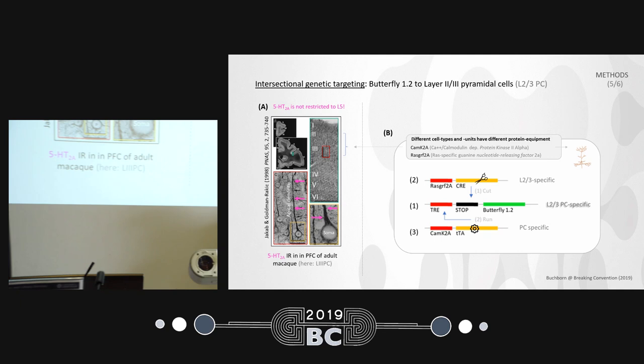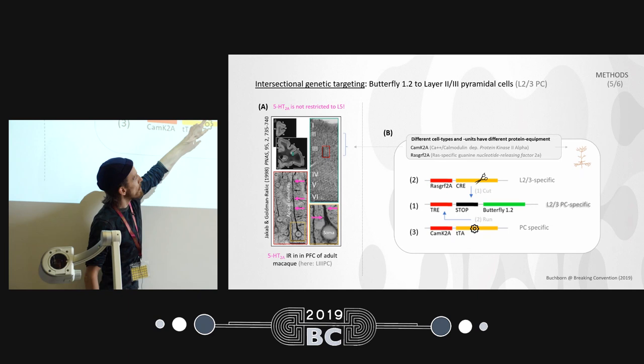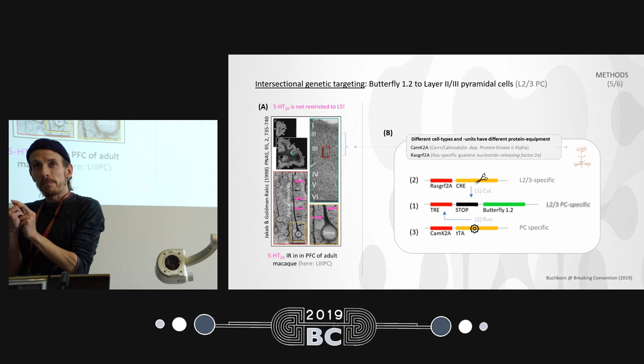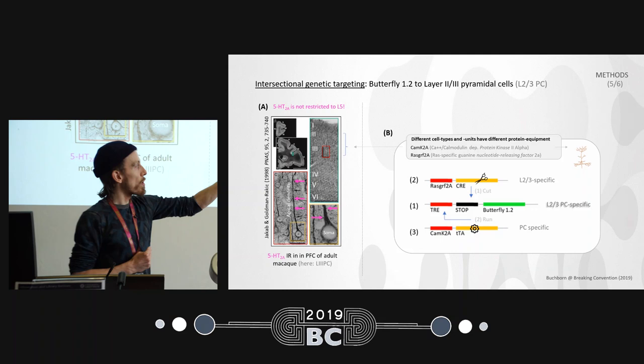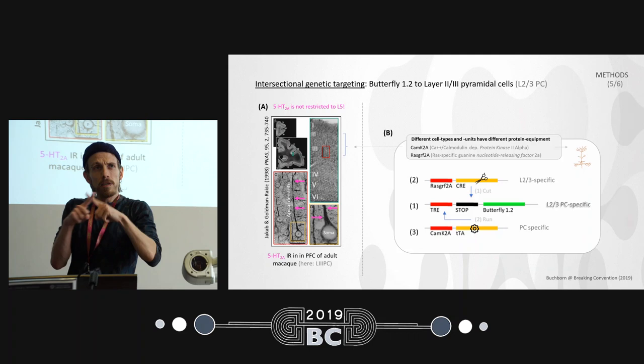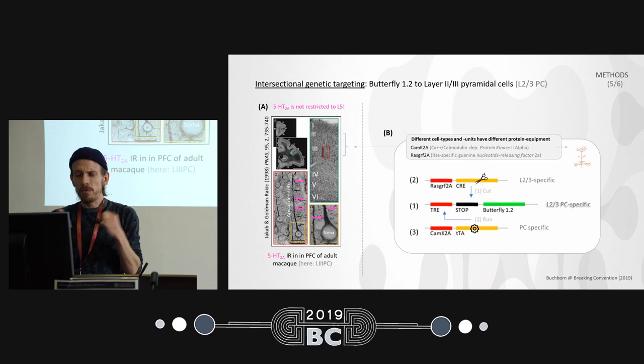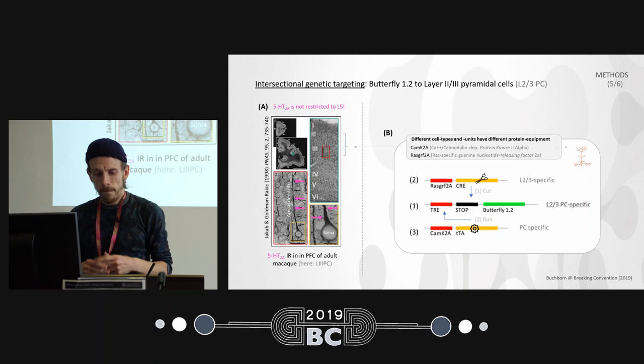To achieve cell-specific expression, there's a stop codon before the Butterfly gene that must be cut away, and a start signal that must be activated. We give the enzymatic scissors to cut away the stop only to layer 2/3 cells, and the start signal only to pyramidal cells. So only at the intersection — layer 2/3 pyramidal cells — is Butterfly expressed. This is called intersectional genetic targeting, and no surgery or skull opening is required.